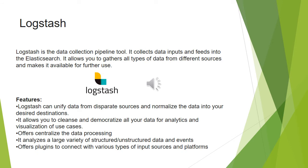The twelfth commercial ETL tool is Logstash. It is a data collection pipeline tool that collects data inputs and feeds into Elasticsearch. It allows you to gather all types of data from different sources and makes it available for further use. Some features are: it can unify data from disparate sources and normalize the data into your desired destinations, it allows you to cleanse and democratize all your data for analytics and visualization use cases, it offers centralized data processing, it analyzes a large variety of structured and unstructured data and events, and it offers plugins to connect with various types of input sources and platforms.